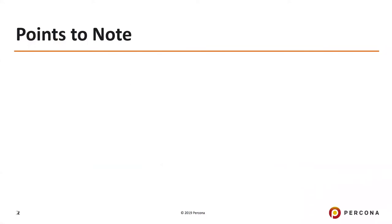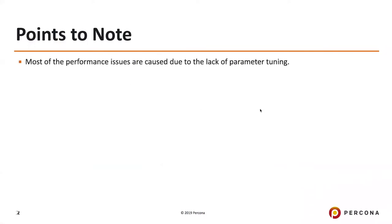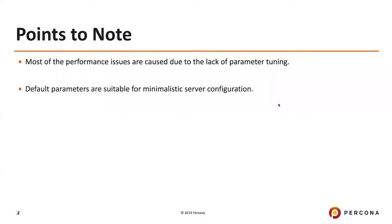Some points to note: most of the performance issues, as we have seen in the majority of client environments, are all due to lack of tuning. Sometimes in Oracle-to-Postgres migrations during the initial stages — when you migrate PL/SQL code to PL/pgSQL, or you migrate some tables and their data and start running some queries — the performance team starts complaining that the performance is not that great on Postgres. What really happens in the backend is that you haven't tuned the parameters that you would have to tune.